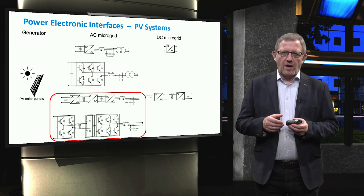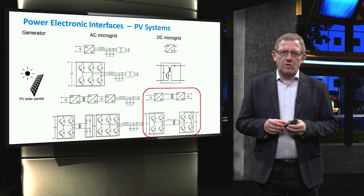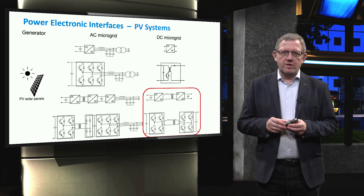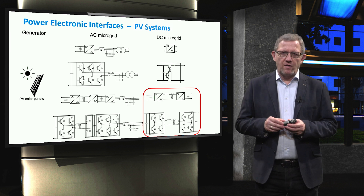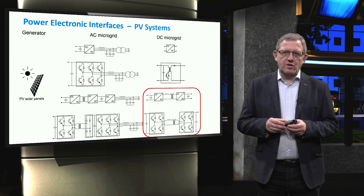To connect a photovoltaic unit to a DC microgrid, typically a boost DC-DC converter is used where the DC link voltage of the grid has a high value. To increase the performance and efficiency, a dual active bridge converter topology is often used.